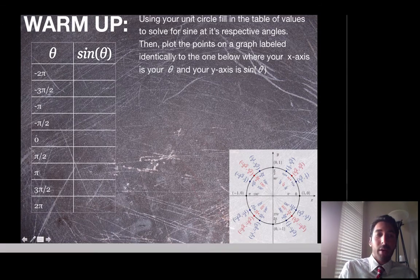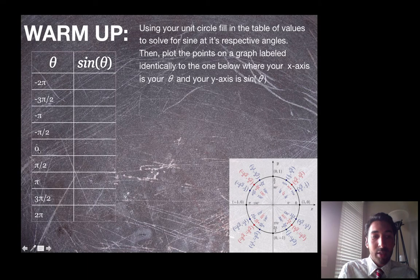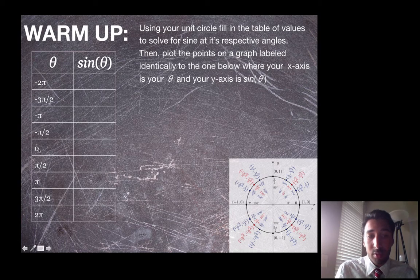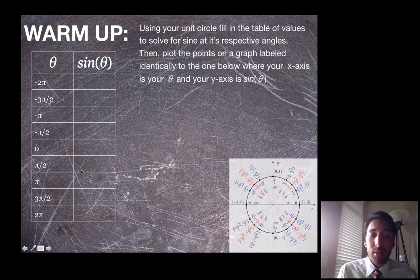For example, if I have theta as 0, and then I have sine of theta, that means I'm going to do sine of 0. If you look on your unit circle, you can see that sine of 0 degrees, or 0 radians, is 0. And then I want you to fill in the rest of this.